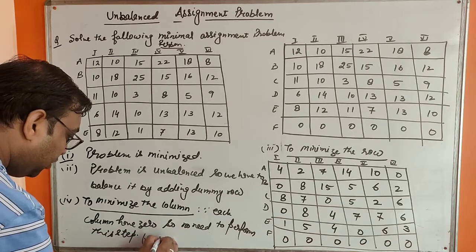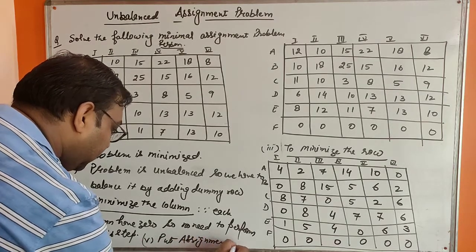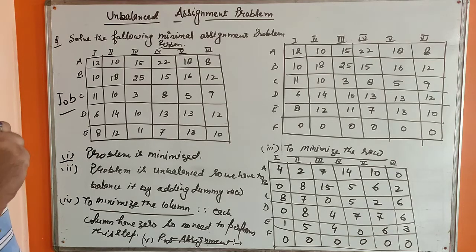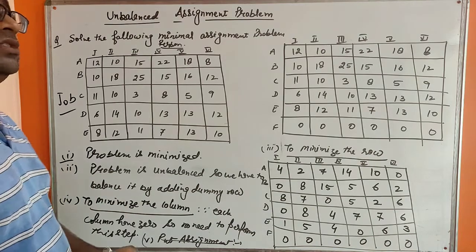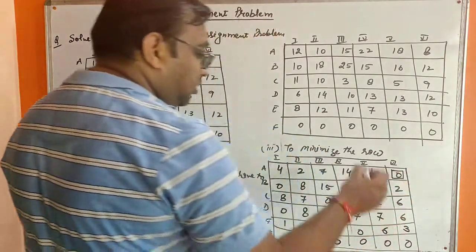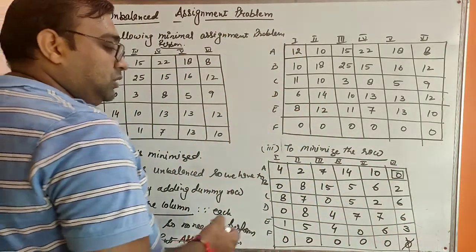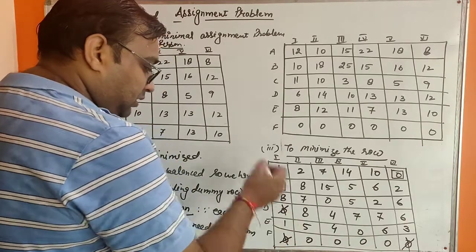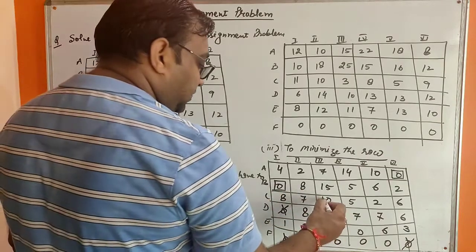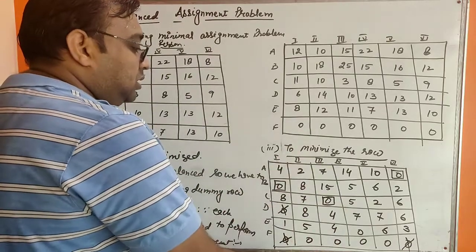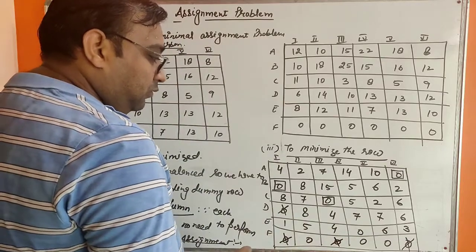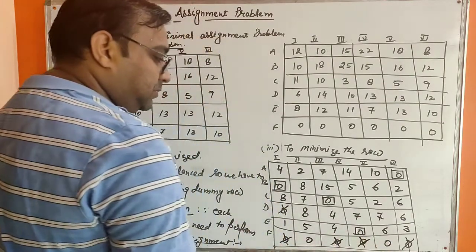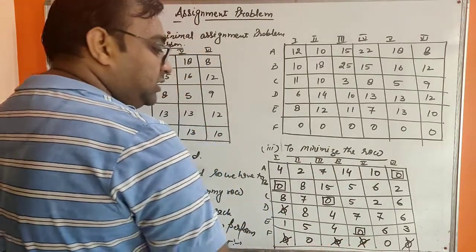The fifth step is to put assignments. We select a single zero from each row. The first row contains a single zero — put assignment on it and cross all zeros in that column. The second row also has a single zero — put assignment, cross related zeros. The third row also has a single zero — assign and cross. The fourth row has no zero, so leave it. The fifth row has one zero — assign and cross. The last row has two zeros, so leave it.